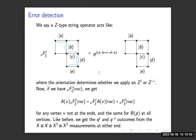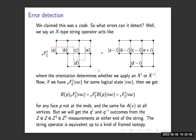Similarly, we can have a Z-type string operator, which passes through vertices and crosses edges in an analogous way. The direction of the arrows relative to the lattice edges determines whether we introduce a plus or minus phase. Just as before, the projectors commute with the string operator everywhere except at the ends. So X-type measurements detect Z-type string operators and vice versa.